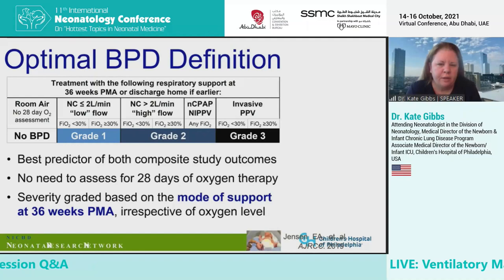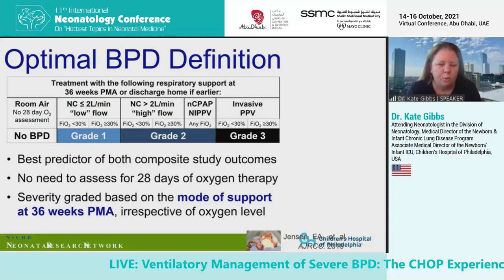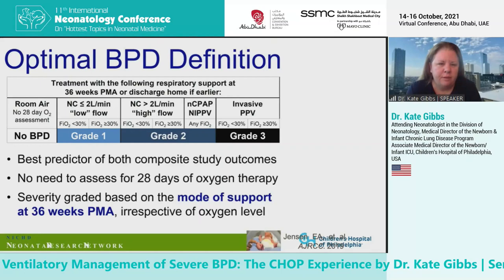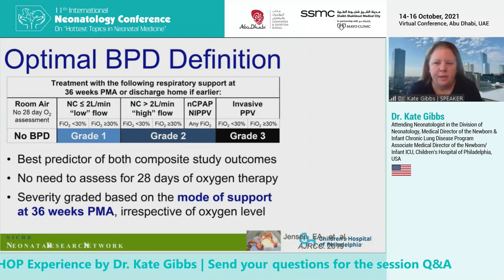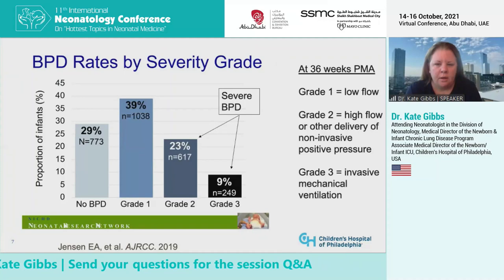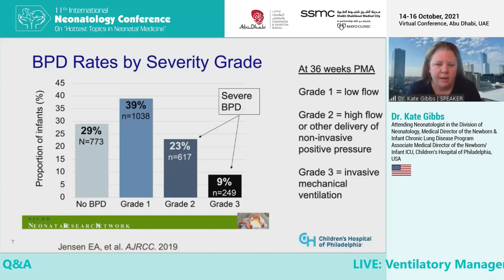The optimal definition of BPD that was the best predictor of composite study outcomes took away the need to assess 28 days of oxygen therapy and was based on the mode of support at 36 weeks postmenstrual age, irrespective of oxygen level. Grade one BPD is an infant on nasal cannula at two liters per minute or less. Grade two is greater than two liters, or CPAP, or nasal intermittent positive pressure ventilation. Grade three BPD is an infant who is mechanically ventilated. Approximately 30% of patients will have what we call severe BPD — those are the patients I'm speaking about today.